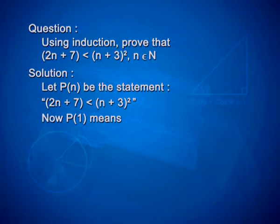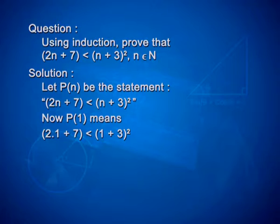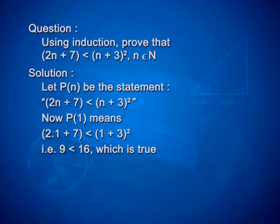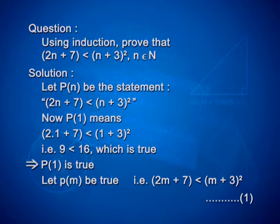p of 1 means 2 into 1 plus 7 is less than 1 plus 3 whole square. On simplification, we get 9 is less than 16, which is obviously true. Therefore, p of 1 is true. Let p of m be true, that is 2m plus 7 is less than m plus 3 whole square. Take this equation as number 1.